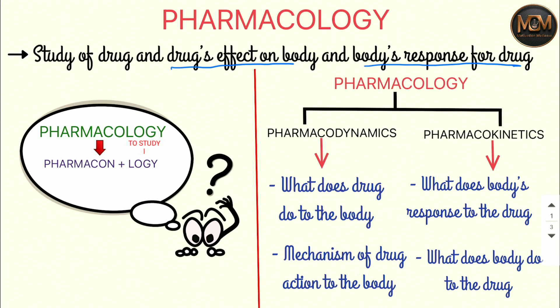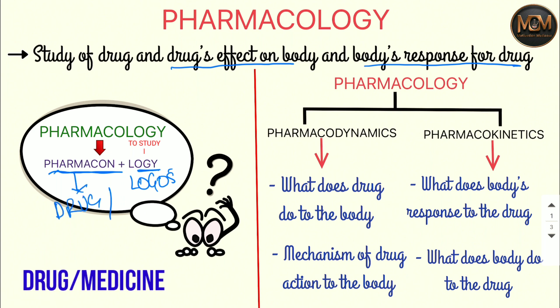We'll understand what is drug and medicine as well — there is not that much difference. First of all, we'll understand how the word 'pharmacology' came about. The word pharmacology is made up of two words: the first one is 'pharmacone' and the next one is 'logi,' also said to be 'logos.'